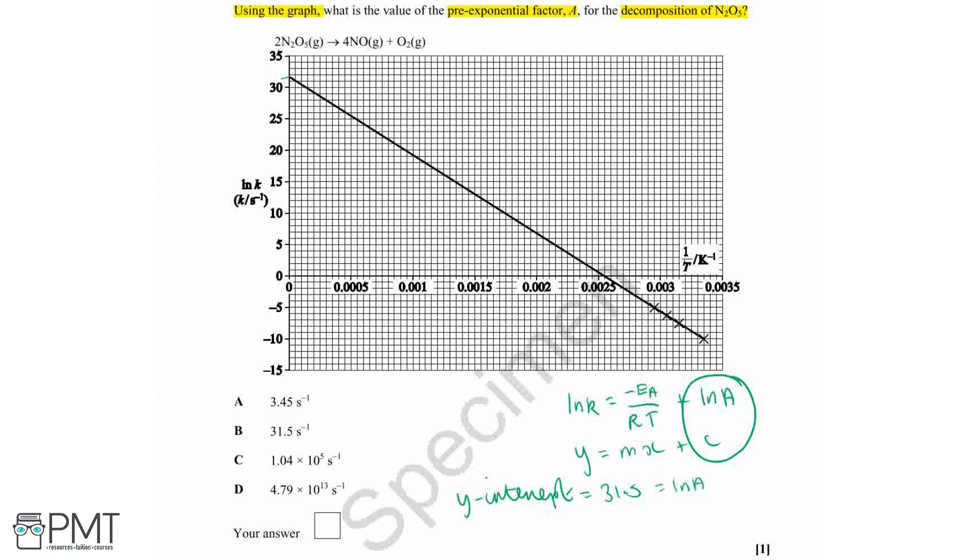So to work that out, we do e to the power of our value and that cancels out the ln. So A is going to be equal to e to the power of 31.5, which in your calculator will give a value of 4.79 times 10 to the 13, and that's in units of seconds to the minus 1.